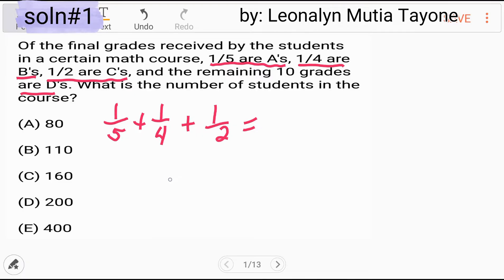Meron tayong separate video on how to find the least common denominators. So 20. 20 divided by 5 equals 4, 4 times 1 equals 4. 20 divided by 4 equals 5, 5 times 1 equals 5. 20 divided by 2 equals 10, 10 times 1 equals 10. So pwede na natin i-add yan. Kopyahin lang si denominator. 4 plus 5 plus 10 equals 19.